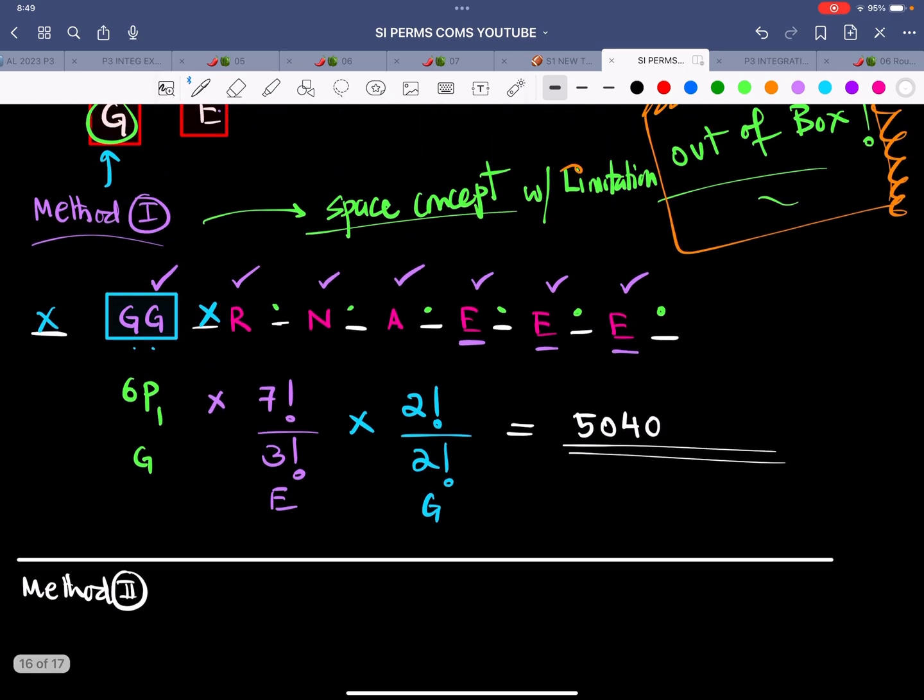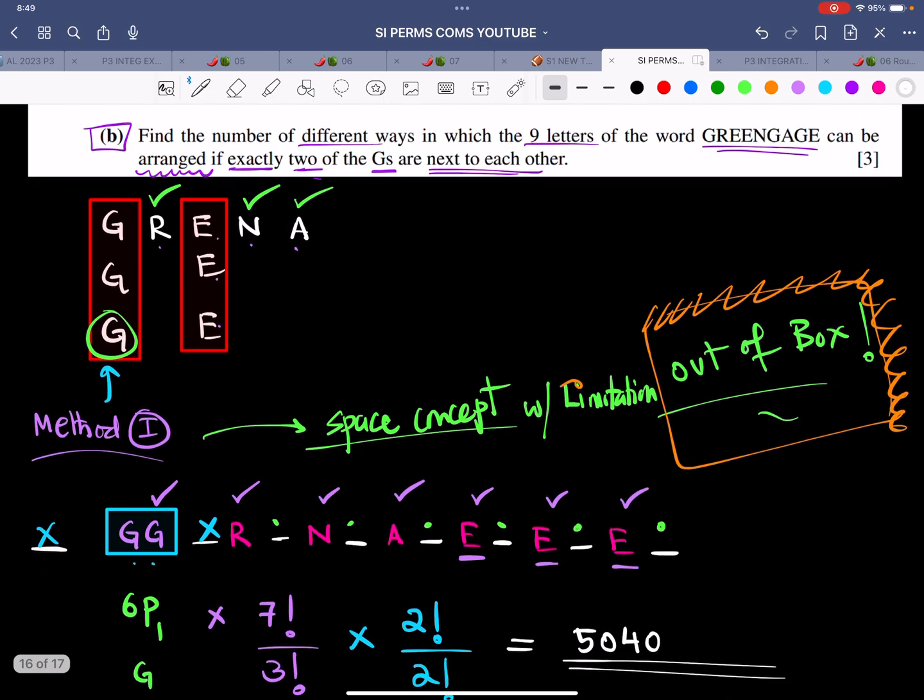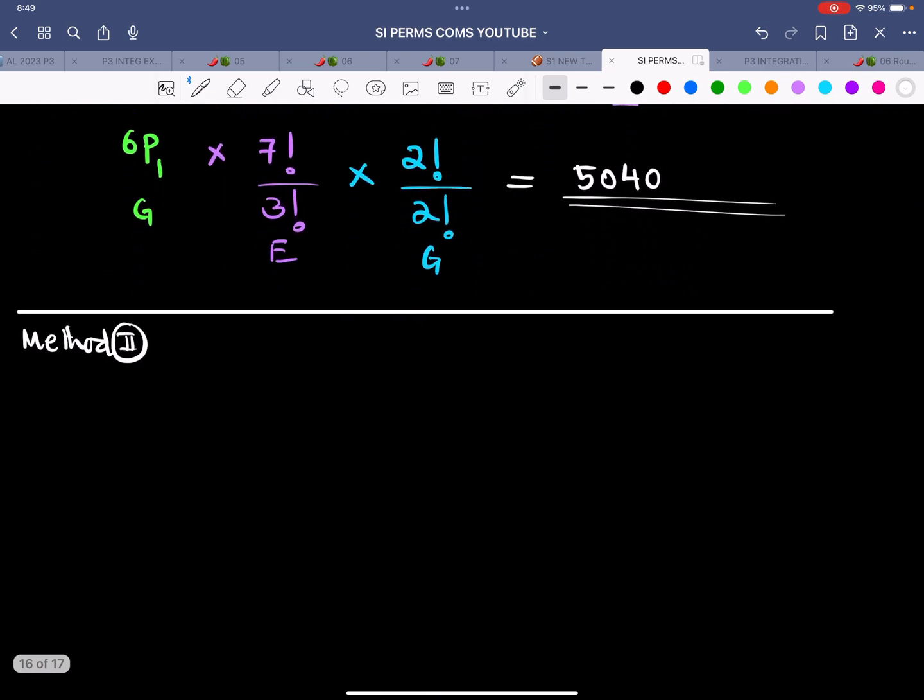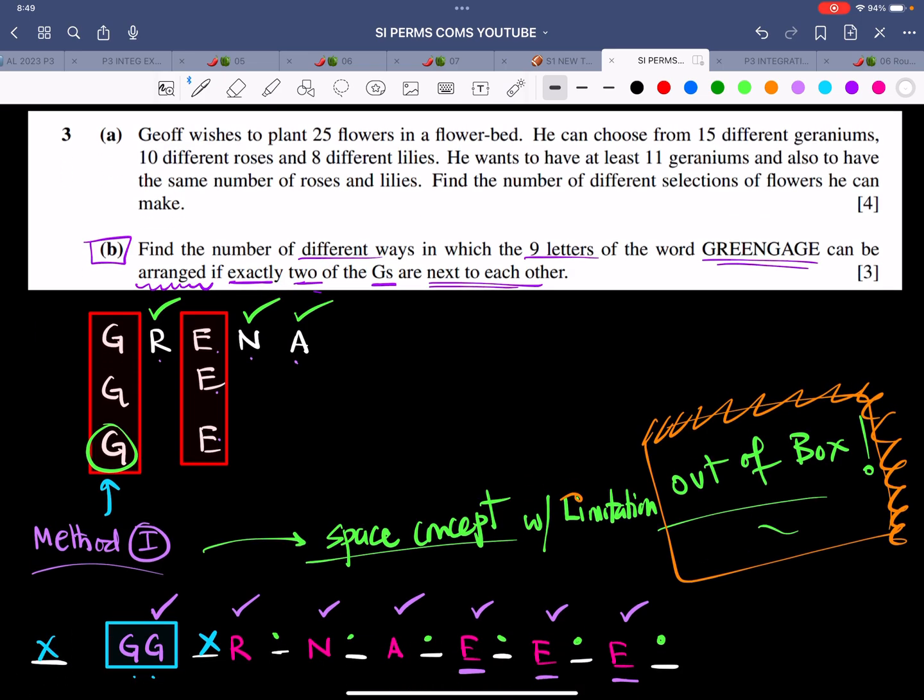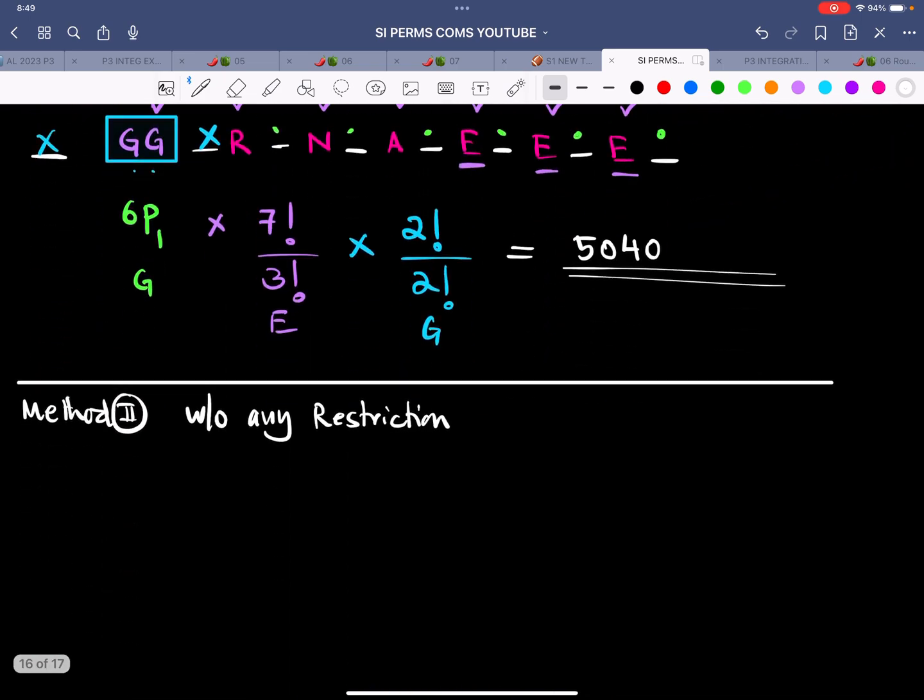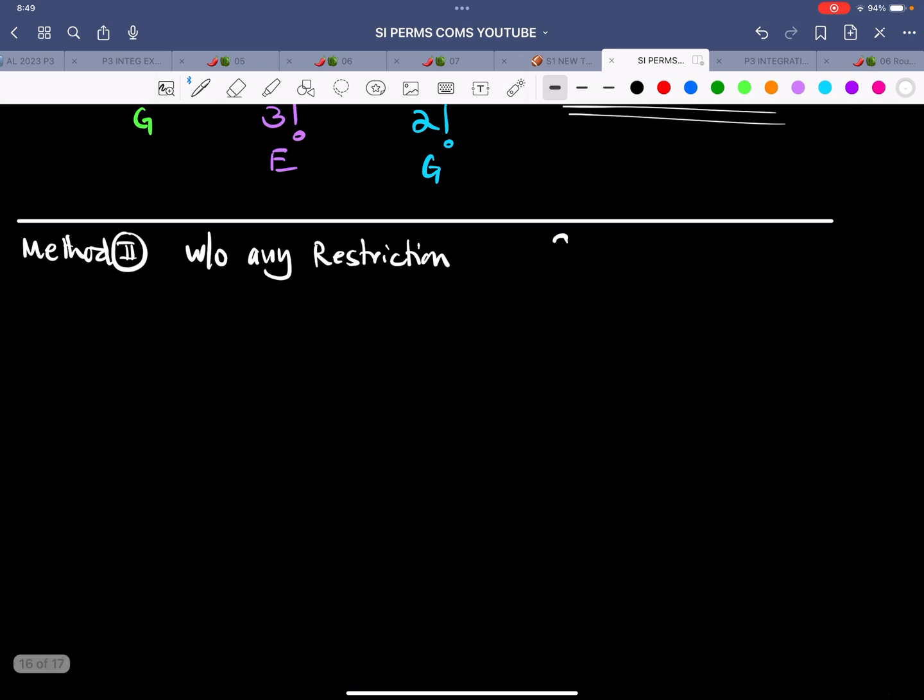Some people are happy with this method. I think it's very conceptual. But there is also another way of doing the same thing. Let me move to method number 2. What is method number 2? Let's first find out without any restriction. There are 9 letters, and 3 G's and 3 E's. So that is 9 factorial divided by 3 factorial for the E's, 3 factorial for the G's. This comes out to be 10080.